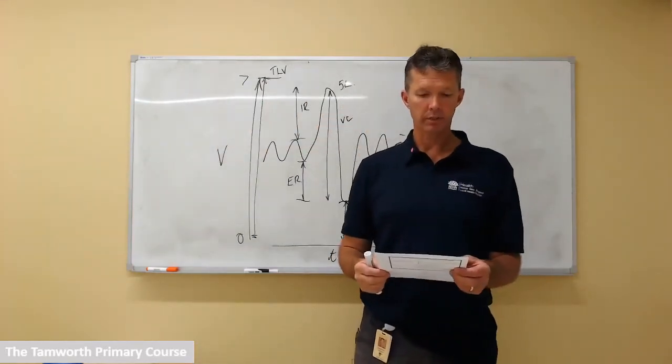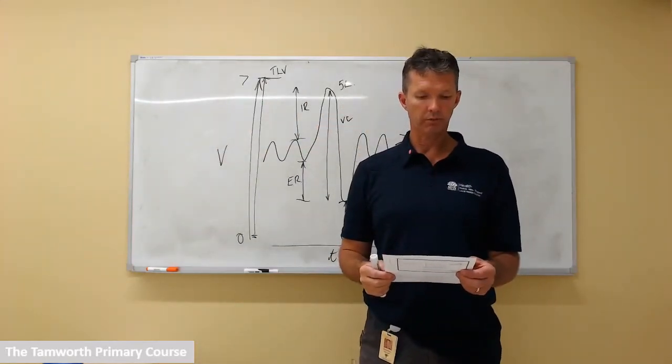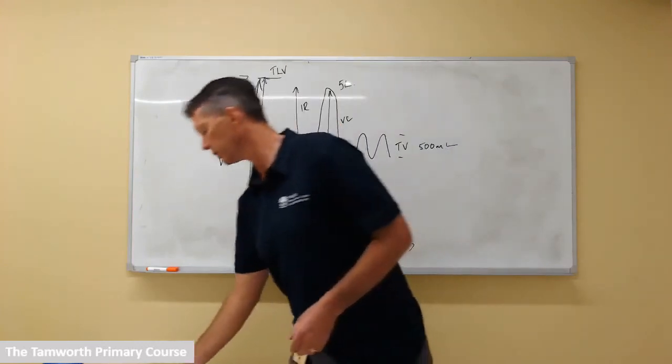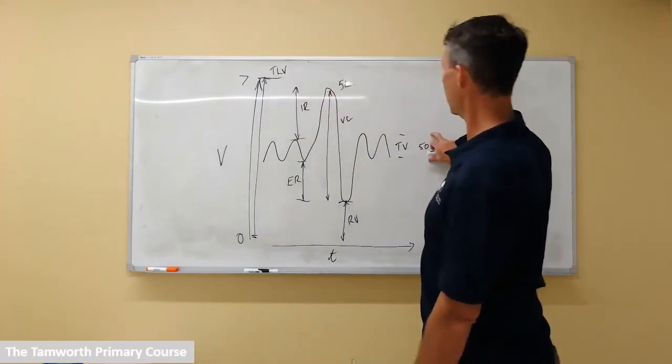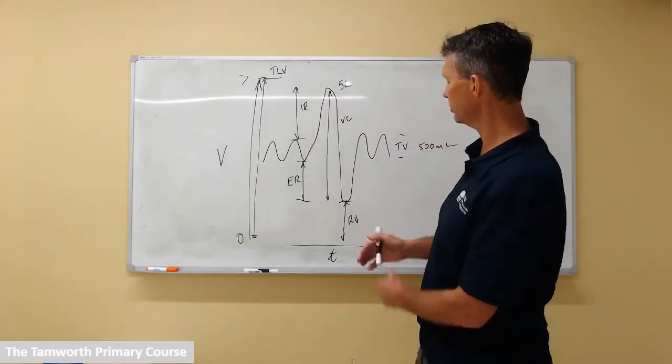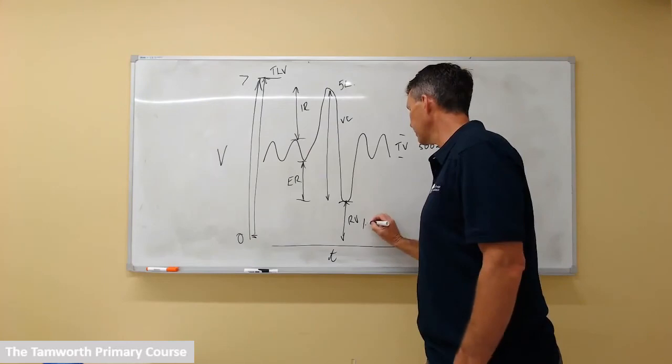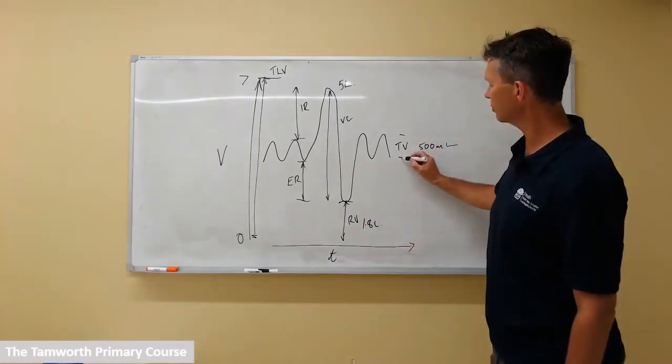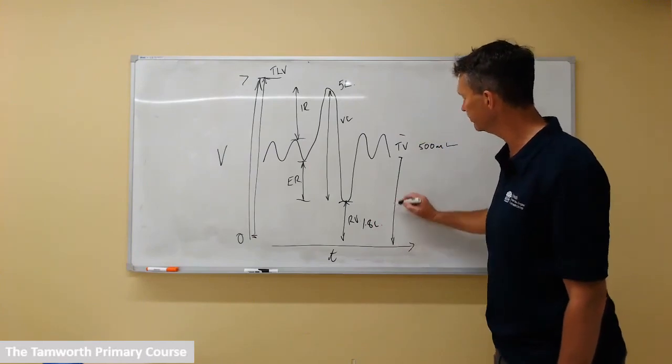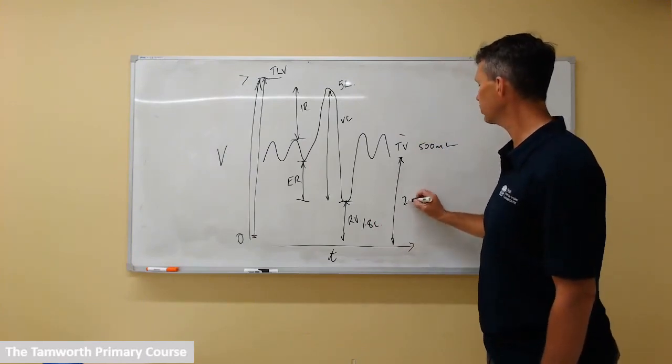Next part of the question is, in an adult what are the typical volumes of these components? So we've mentioned total lung volume already, we've mentioned a tidal volume, we've mentioned a residual volume, and that's roughly 1.8 liters. We mentioned a functional residual capacity as well, which is roughly 2.5 liters.